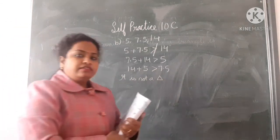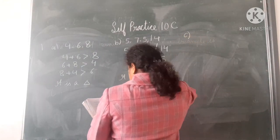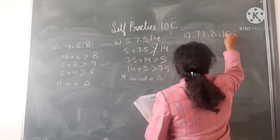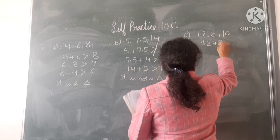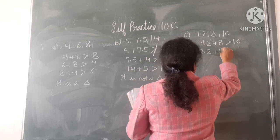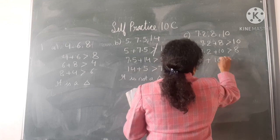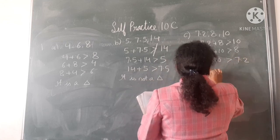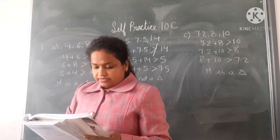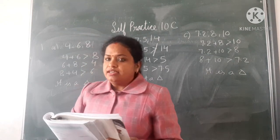It should be clear with all three points. Now see the C part: 7.2, 8, and 10. 7.2 plus 8 is greater than 10. 7.2 plus 10 is greater than 8. 8 plus 10 is greater than 7.2. So it is a triangle. You have to see whether at every place it is following or not.